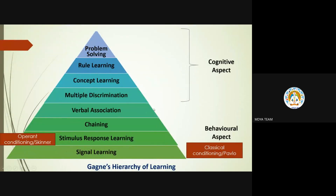Now the hierarchy of learning. In the hierarchy of learning, at the bottom is signal learning, then stimulus-response learning, chaining, verbal association, multiple discrimination, concept learning, rule learning, and problem solving. This is Gagne's hierarchy. Signal learning comes under classical conditioning; stimulus-response comes under operant conditioning. The first four are behavioral aspects and the upper four are cognitive aspects.